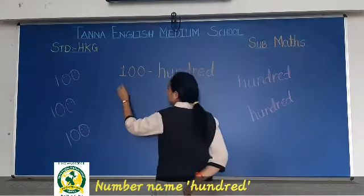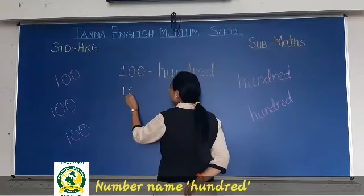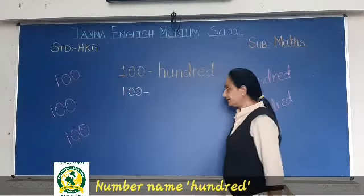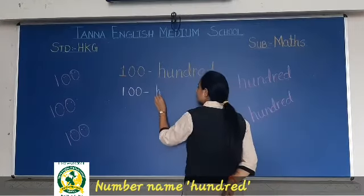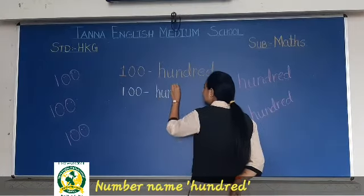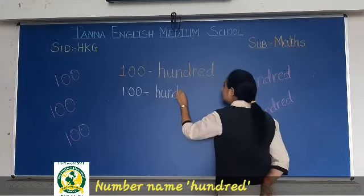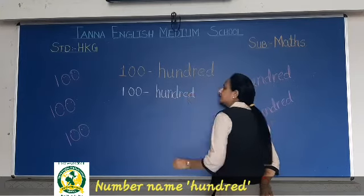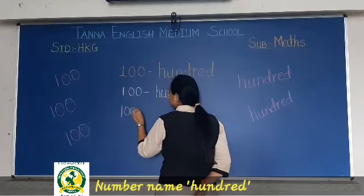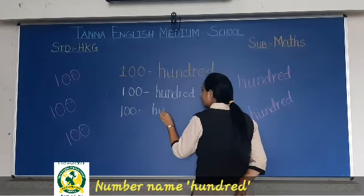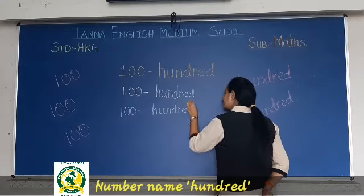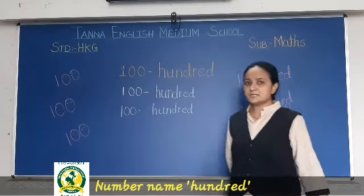You will write like this. H-U-N-D-R-E-D, 100. Again, 100. Again write: H-U-N-D-R-E-D, 100.